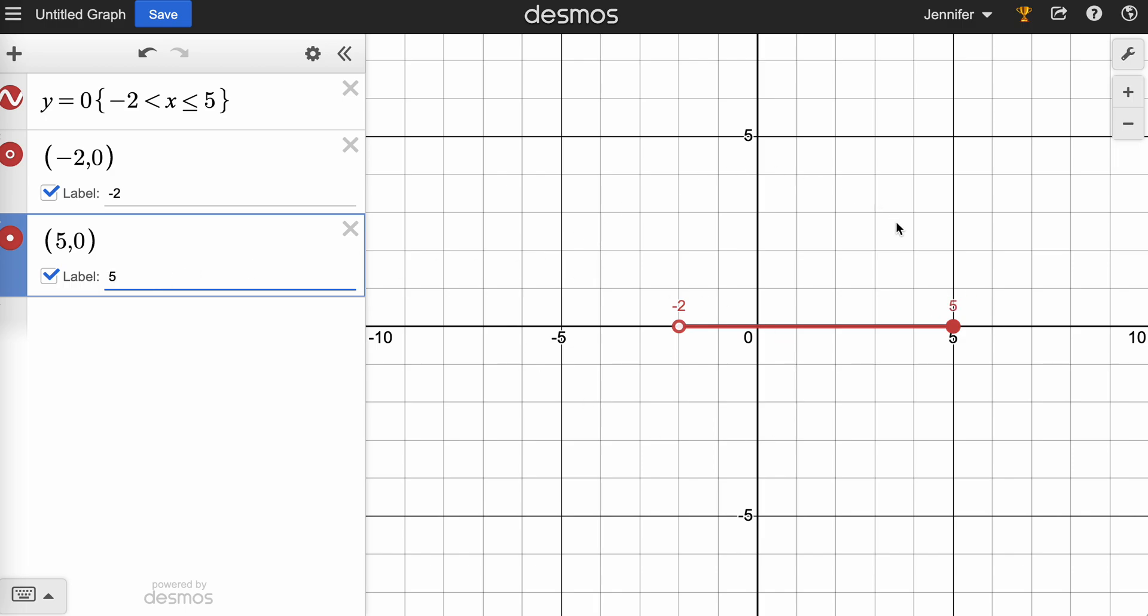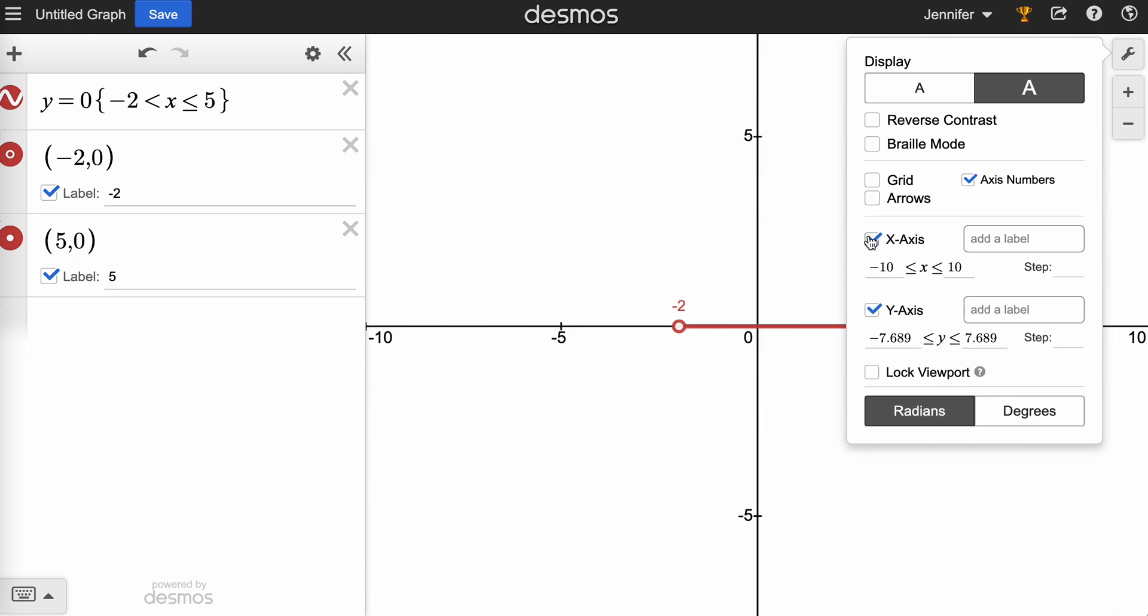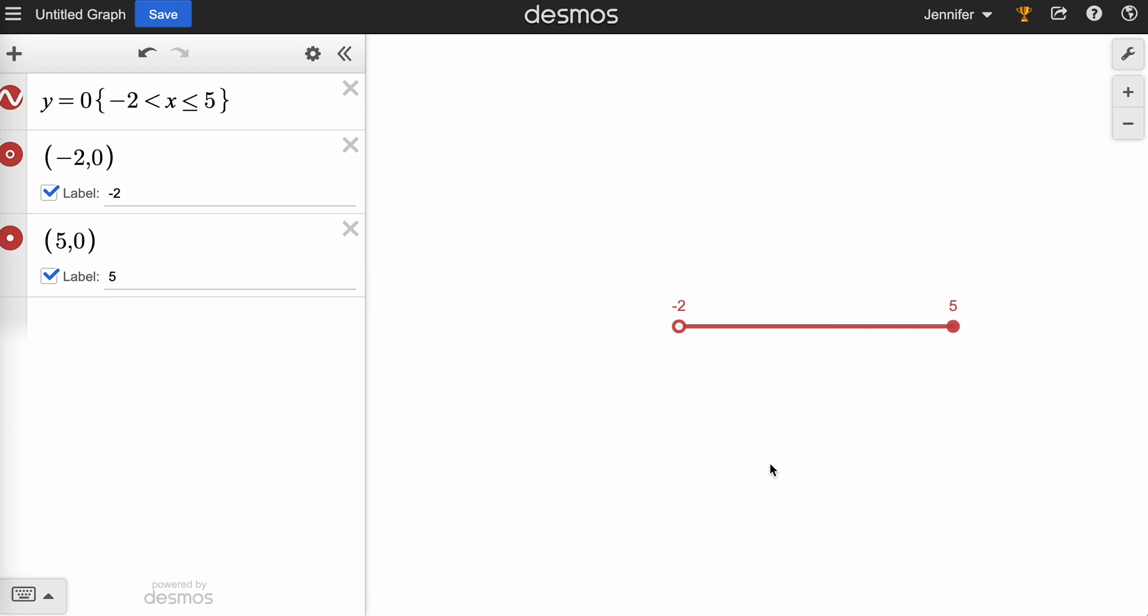And if you don't want all the background, if you don't want the x-axis and the y-axis, you go up to the little wrench in the right-hand corner. And you select, we're going to get rid of the grid. We're also going to get rid of the x-axis and the y-axis. And what you have now is just your line segment.